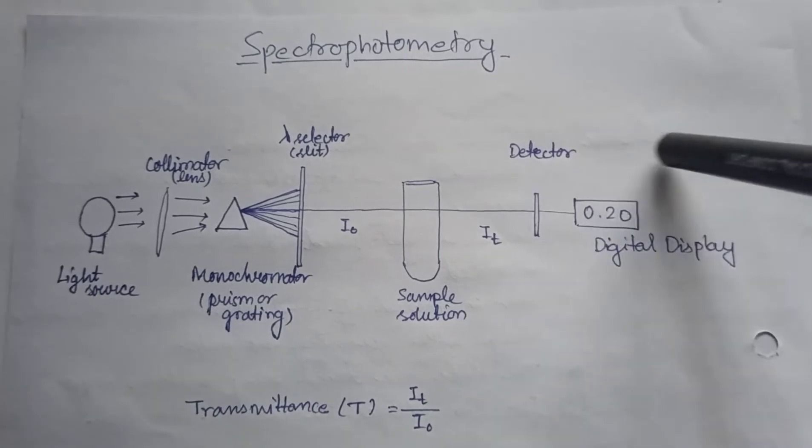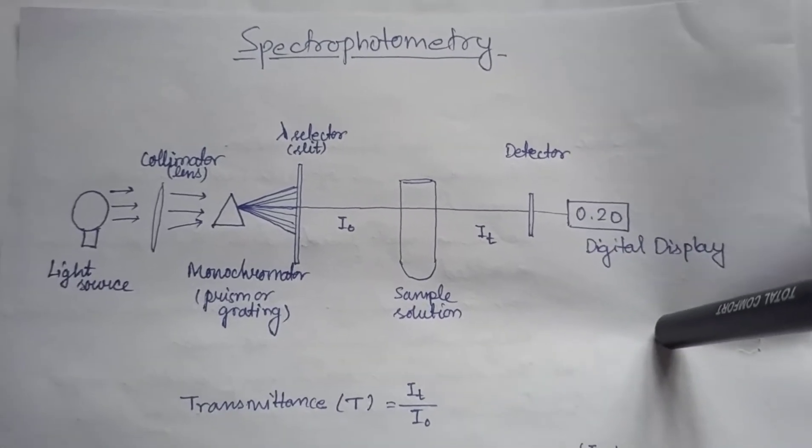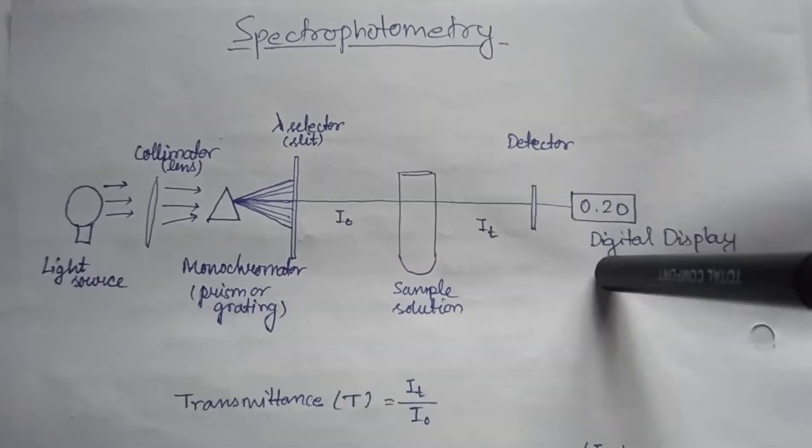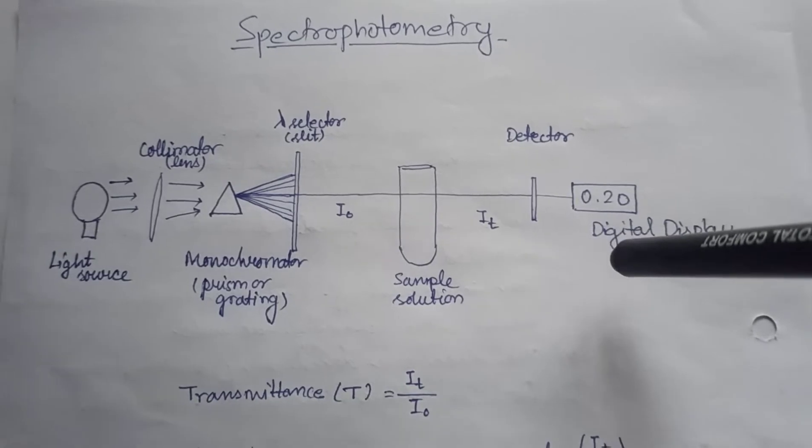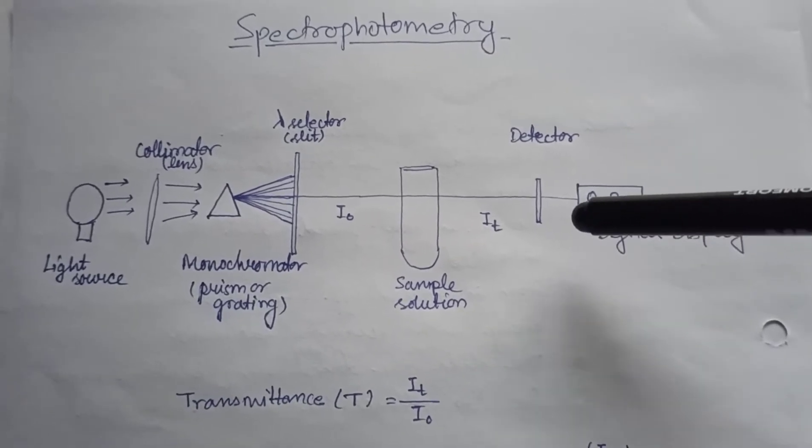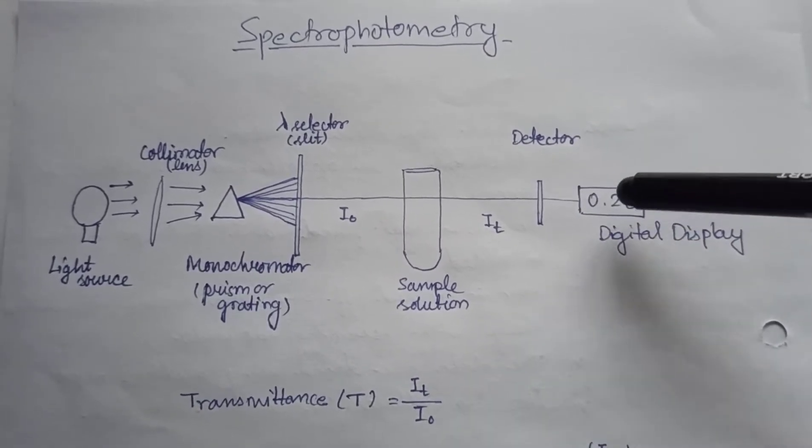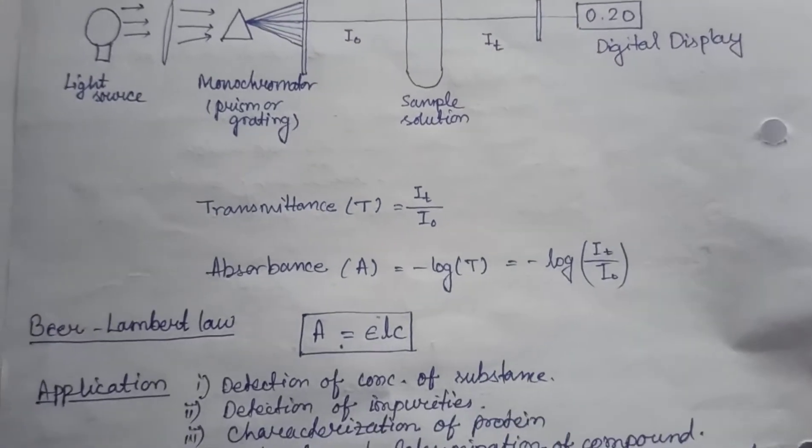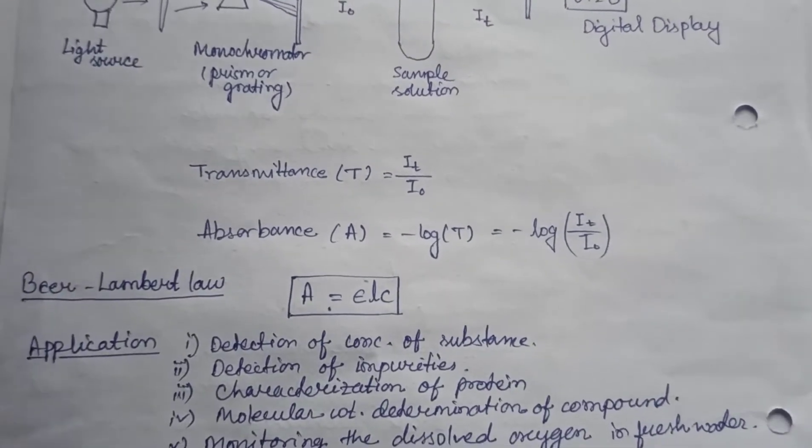This is how the spectrophotometer works and it tells us about the concentration of a solution. For example, there is a law that is Beer-Lambert law.